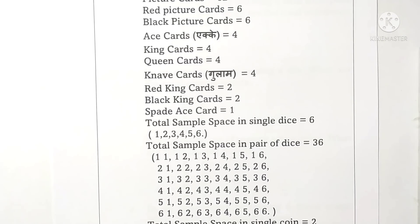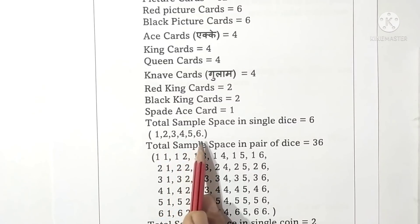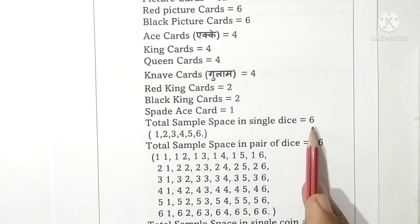Aces: 4. King cards: 4. Total sample space in a single dice is 6. There are six numbers: 1, 2, 3, 4, 5, 6. Therefore sample space is 6.